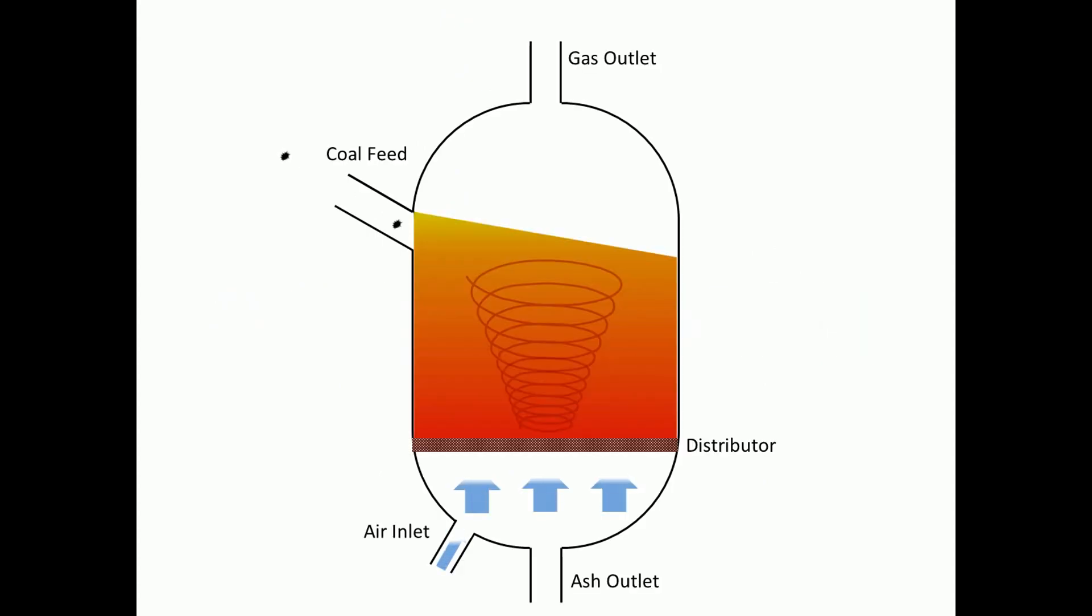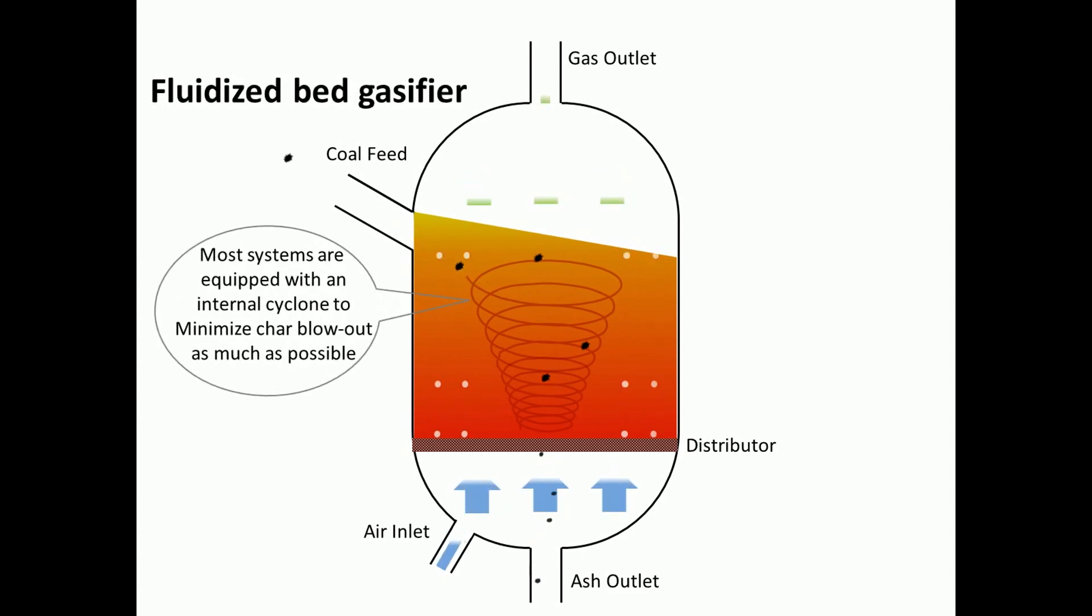The third type of gasifier is fluidized bed. There are no distinguished reaction zones in this reactor. Fuel particles enter on the side, very quickly mixed and heated up, while air enters near the bottom with enough speed to fully suspend the reactor bed. All reactions take place rapidly and simultaneously.